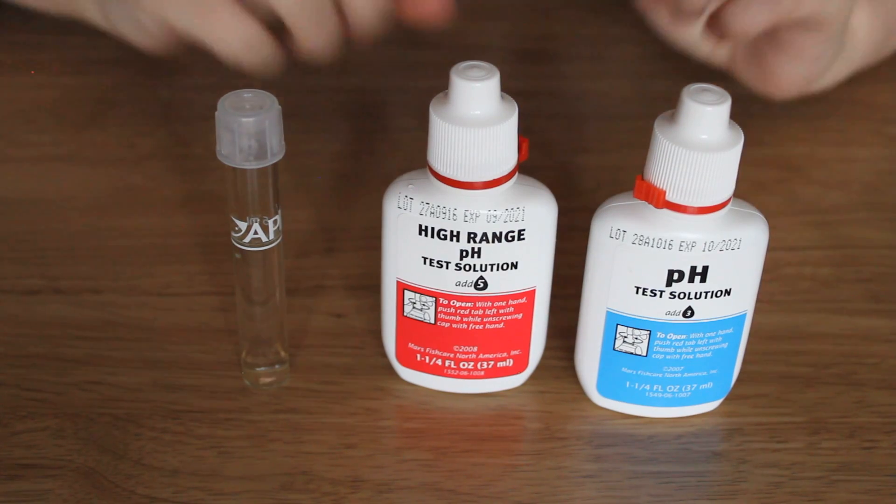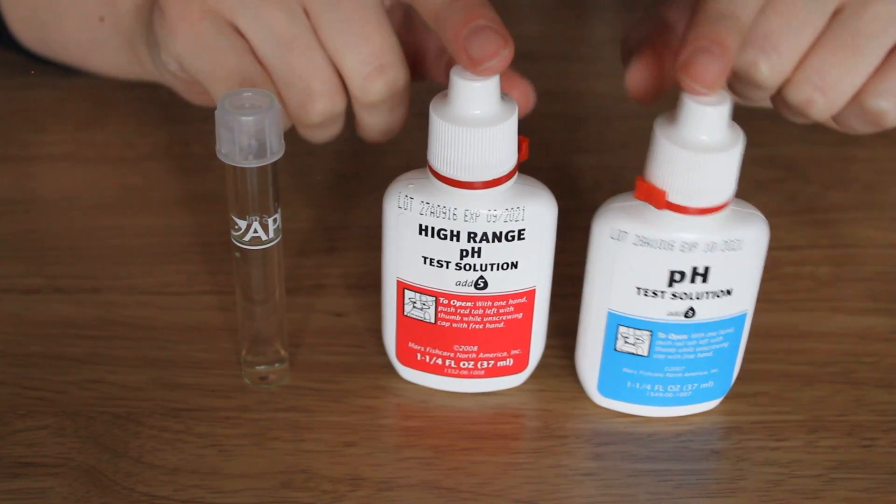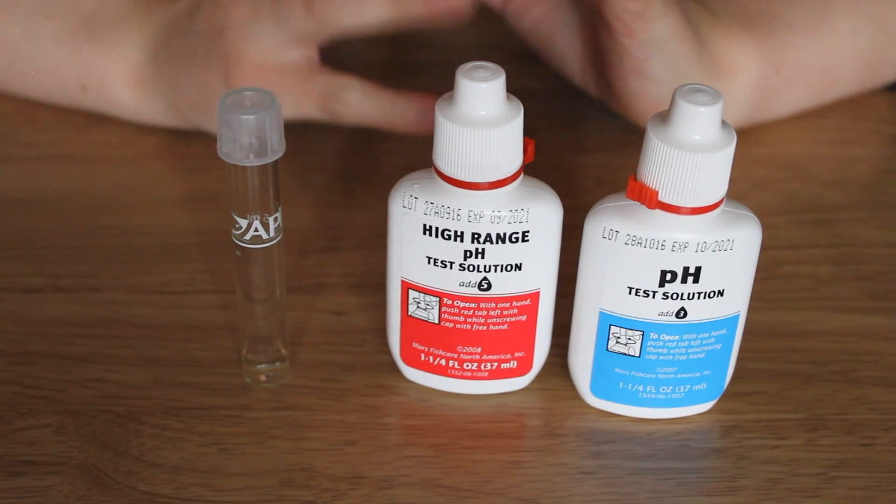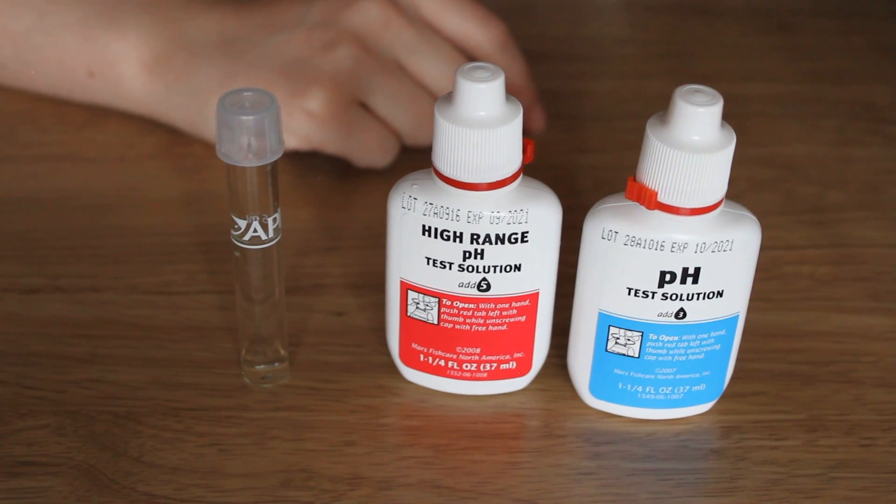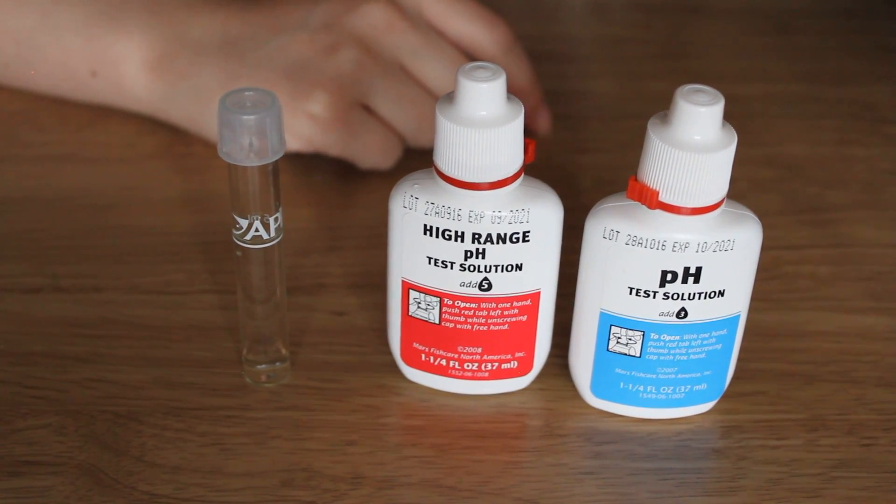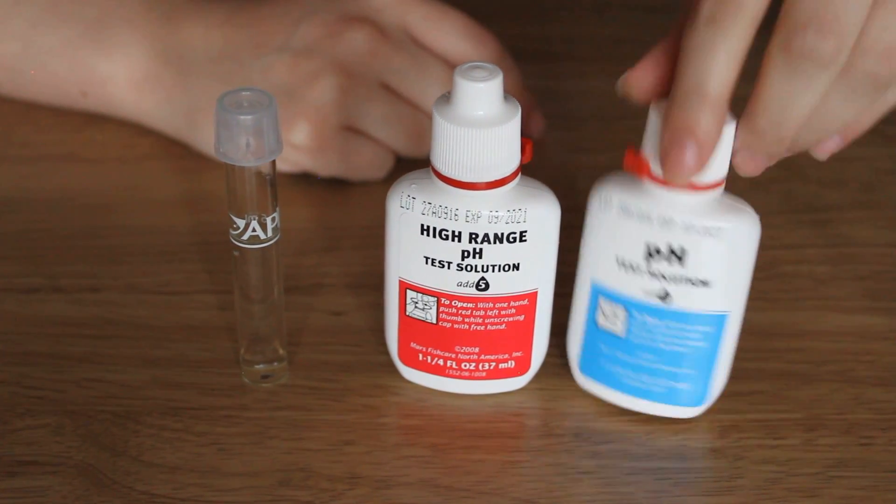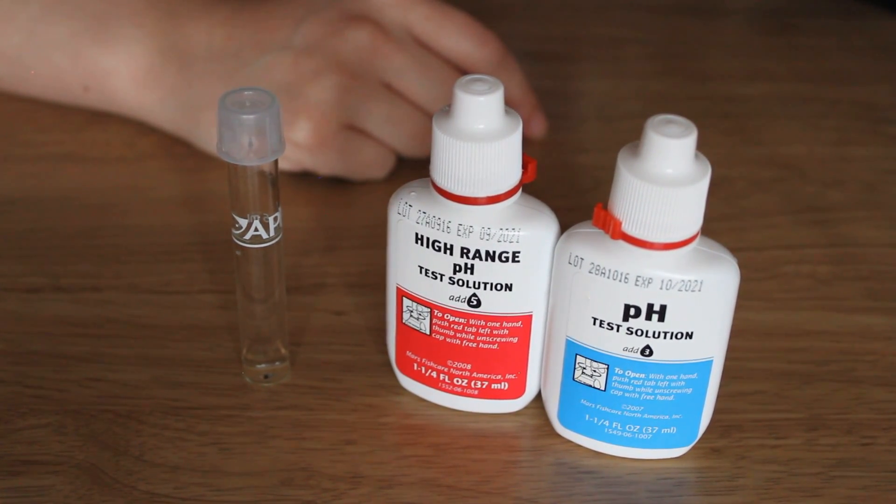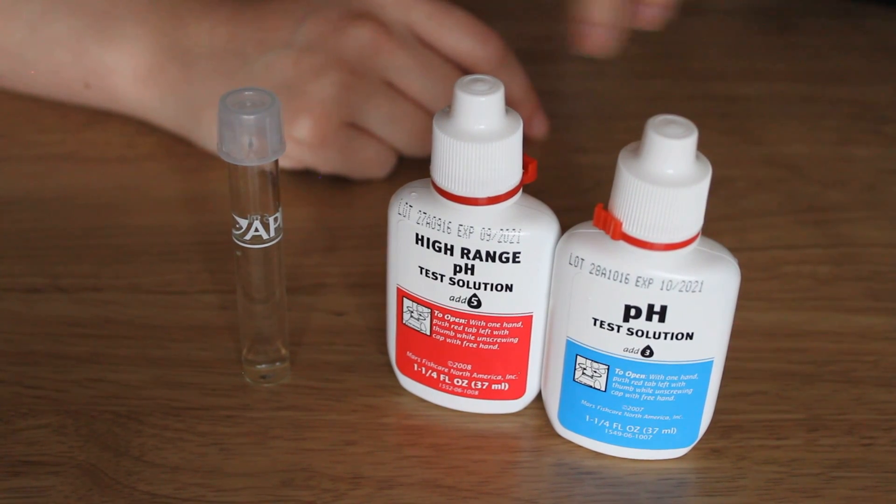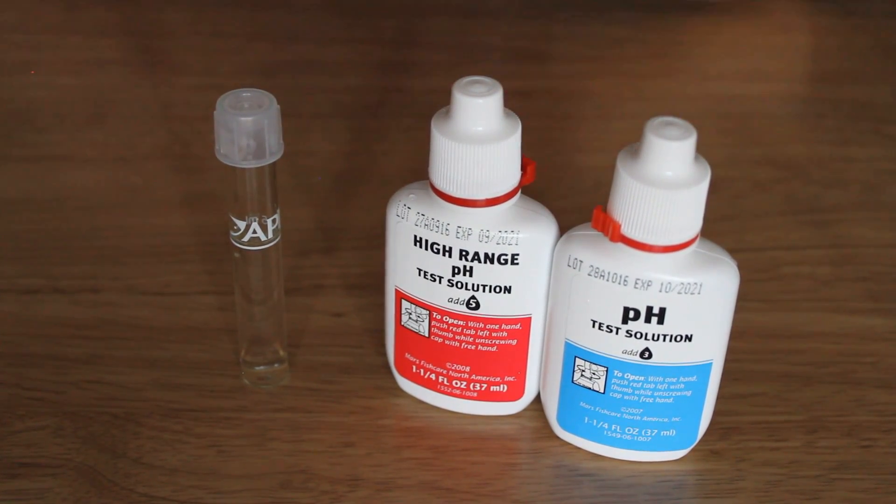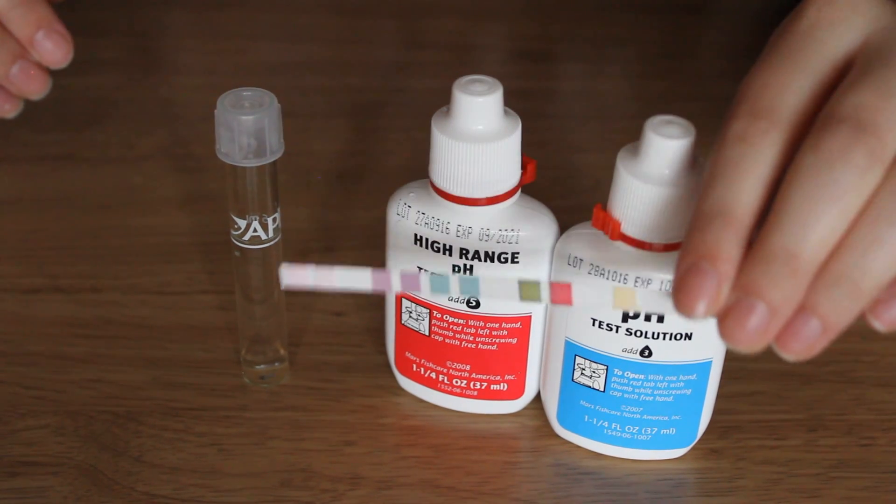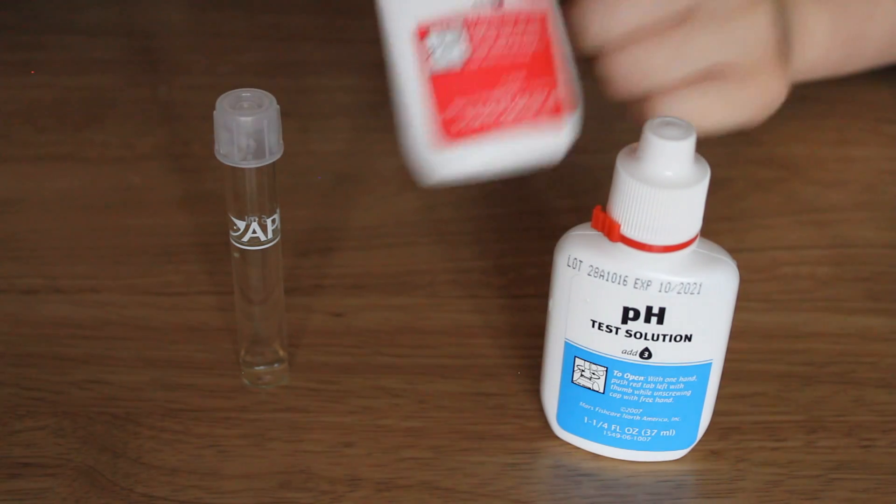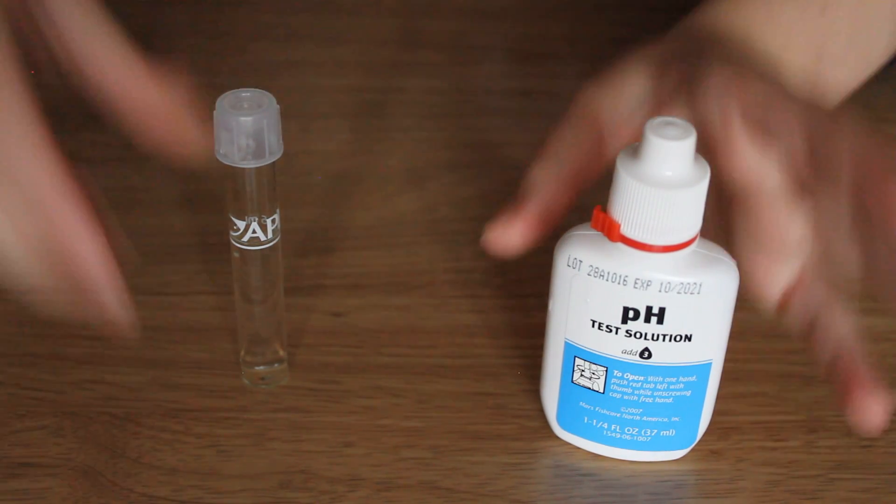Whilst we're still waiting for the other test to settle we're going to test the pH level. You'll find you have two different bottles for this. The blue one is for lower pH levels, but if you have hard water, if the water you're using for your aquariums tap water and you know it's hard, you'll want to use this red one. I do know the tap water here is hard but we're going to try them both anyway. As I said in the previous test, this tester strip is now moved to around 8.